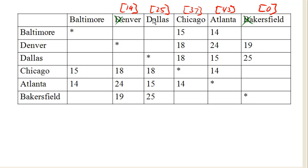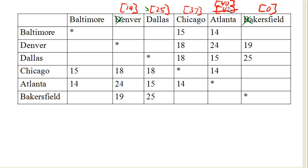Next closest is Dallas, so we move on to Dallas. From Dallas, 25 plus 18 would be 43 to Chicago, but 43 is longer than our current path. We could also say from Dallas we could go to Atlanta — 25 plus 15 is 40. And 40 is better than 43, so we're going to replace that 43 with a time of 40, because we have a more efficient route now. We don't want to go back to Bakersfield, so we're now done with Dallas.